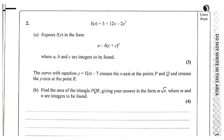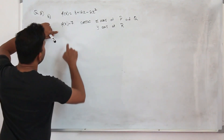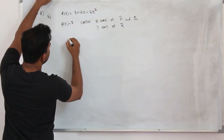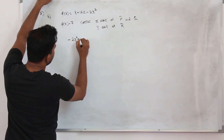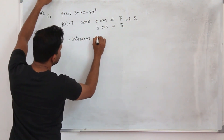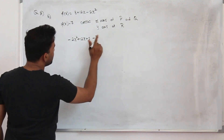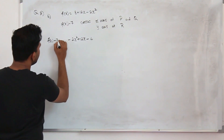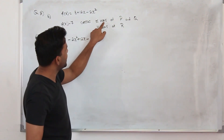Part b: the curve with equation f(x) - 7 crosses the x-axis at points P and Q, and crosses the y-axis at point R. Find the area of triangle PQR in the form m√n where m and n are integers — four marks. Since f(x) = -2x² + 12x + 3, the new function f(x) - 7 = -2x² + 12x + 3 - 7 = -2x² + 12x - 4.